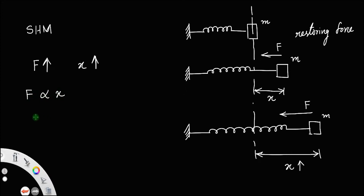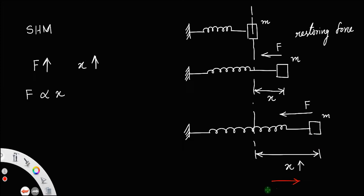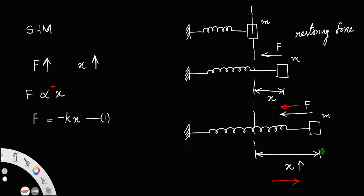Remember, this force is the restoring force. You are displacing the mass towards the right, and the restoring force is bringing the mass back to the mean position — that is, the restoring force acts in the direction opposite to that of displacement. In mathematics, if two physical quantities are in opposite directions, you put a minus sign. So this can be written as F = -kx. Let us call that equation number one. Since the displacement is towards the right and the force is towards the left, that is why we put the minus sign.